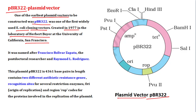PBR322 was named after the scientists who created it. Francisco Bolivar Zapata was a post-doctoral researcher, and Raymond L. Rodriguez also worked on it. Taking B from Bolivar and R from Rodriguez, combined with P for Plasmid, gives PBR, and 322 is the code number — hence PBR322.